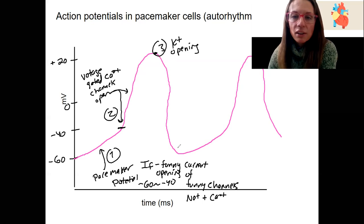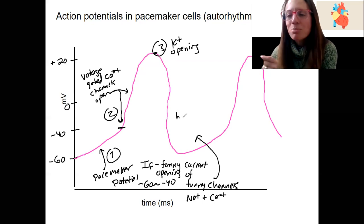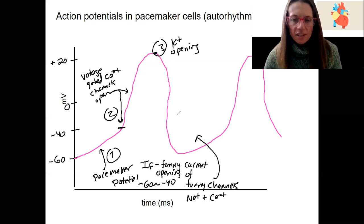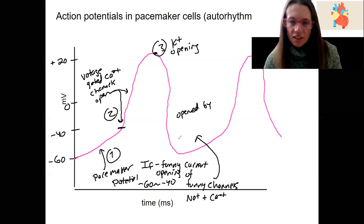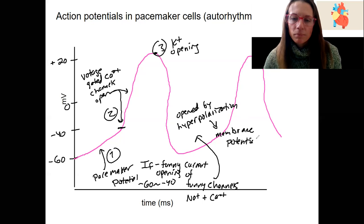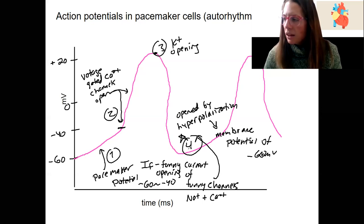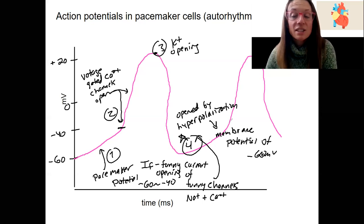As soon as we hit down here again, we're going to activate these funny channels again. So these funny channels are hyperpolarization-activated — opened by the membrane potential being around minus 60. So as soon as the membrane potential hits minus 60, these channels are going to open, and that immediately causes the flow of ions in until you reach threshold again.